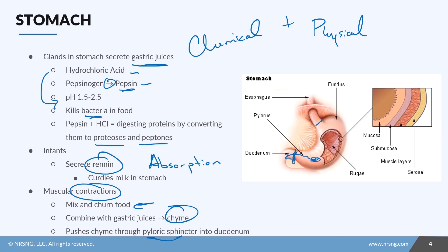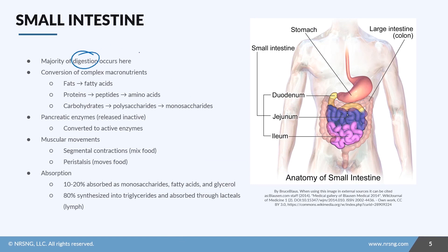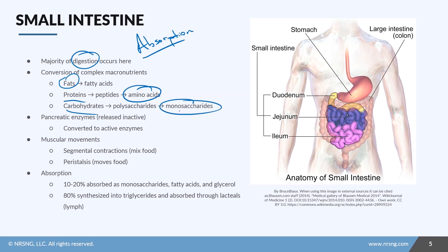There are two sphincters: the pyloric sphincter and the cardiac sphincter. For our purposes here, just know that chyme is going to pass through the pyloric sphincter and go into the duodenum. Now that the food is in the small intestine, this is where the majority of digestion occurs, including absorption — the conversion of complex macronutrients: fats to fatty acids, proteins into peptides and amino acids, and carbohydrates into monosaccharides. The pancreas releases enzymes into the digestive tract; these are inactive enzymes that become activated once they hit the small intestine.